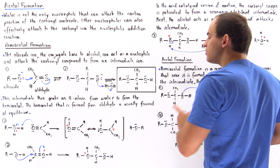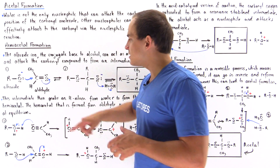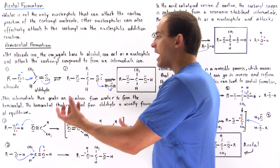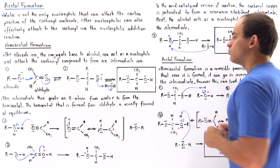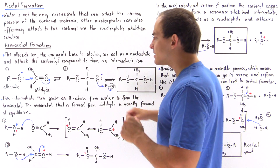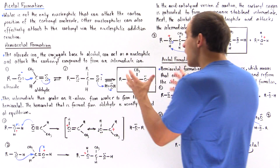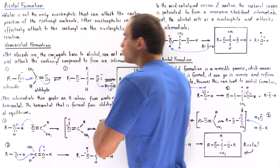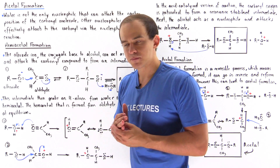This is our hemiacetal formed when a carbonyl reacts with our alkoxide. In this particular case, we use the aldehyde for our carbonyl. Whenever an aldehyde reacts with alkoxide to form the hemiacetal product, this product will be favored at equilibrium — meaning at equilibrium we're going to have a lot of this product. However, if we replaced the aldehyde with a ketone, the product would not be favored and the equilibrium of the reaction would lie to the reactant side.